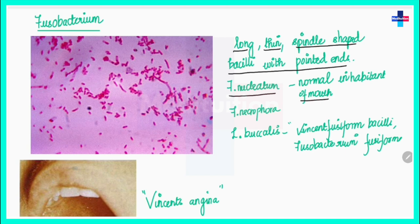In oral infections and pleuropulmonary sepsis, Fusobacterium nucleatum can be isolated from clinical specimens. Fusobacterium necrophorum produces a lot of exotoxins and is responsible for liver abscesses and abdominal infections in both animals and humans.